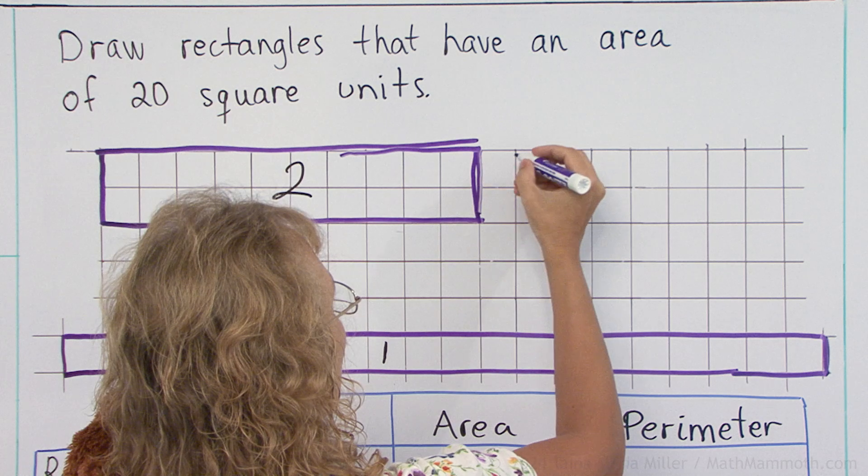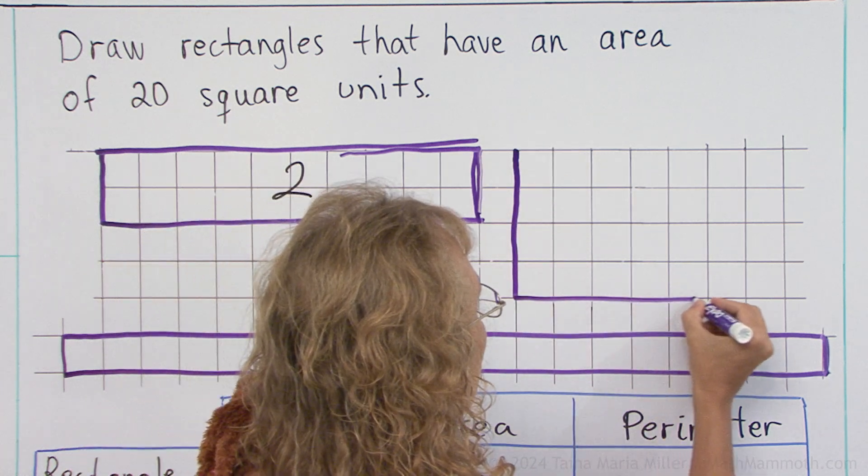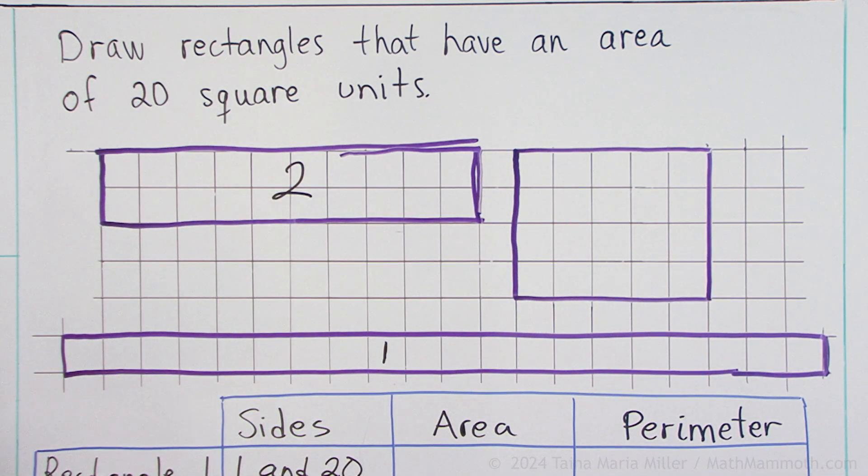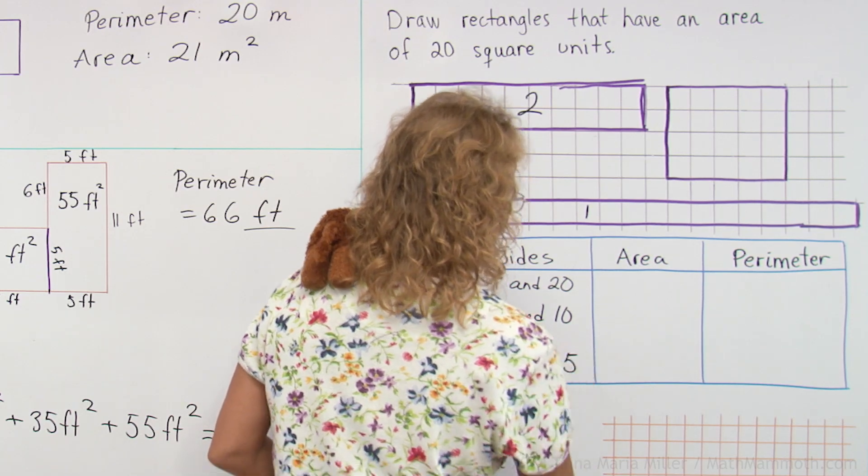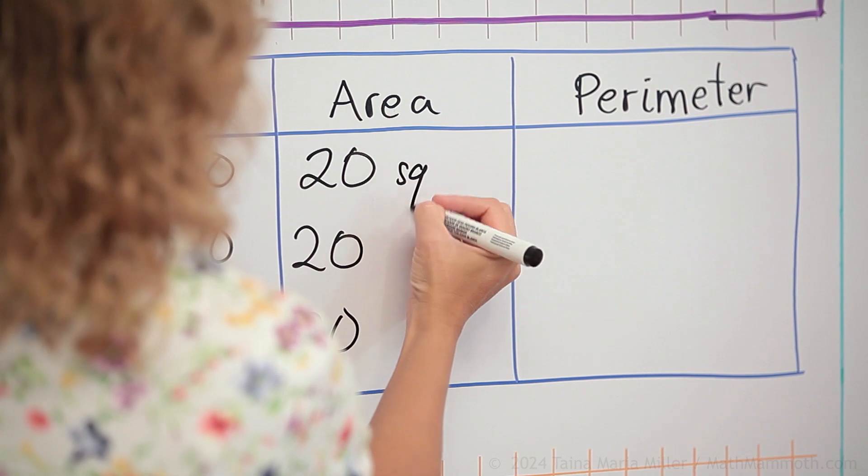So we can draw 4 times 5. There. That also has 20 squares inside. So we get 4 and 5. The area for each one of these is 20 square units.